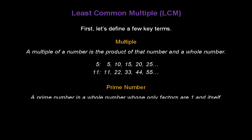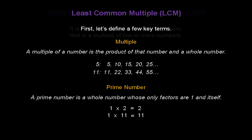Let's also define 'prime number.' A prime number is a whole number whose only factors are one and itself. Take the number two, for instance. What numbers can I multiply together to give me a two? Well, there are only two numbers: one and two. How about the number eleven? The only two numbers that will multiply together to give eleven are one and eleven. So, two and eleven are a couple of examples of prime numbers.